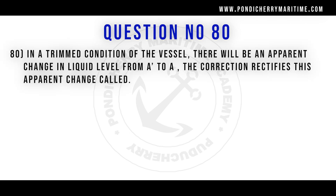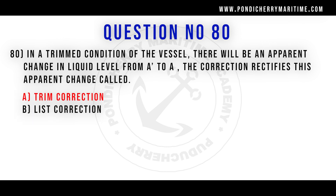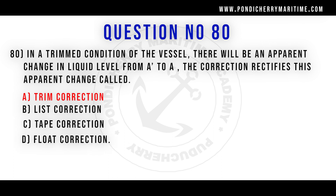Question 80: In a trimmed condition of a vessel, there will be an apparent change in the liquid level from A1 to A. The correction that rectifies this apparent change is called what? Option A: trim correction. Option B: list correction. Option C: tape correction. Option D: float correction. Correct answer is Option A: trim correction.